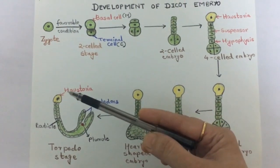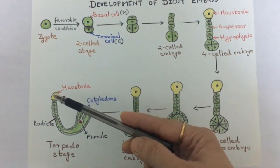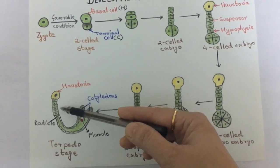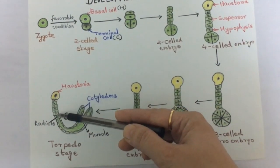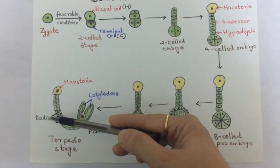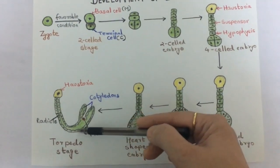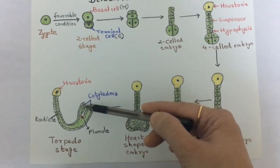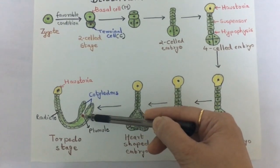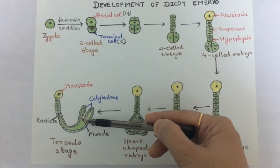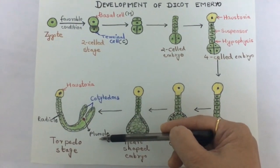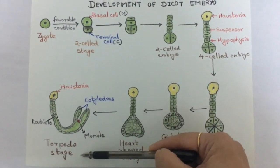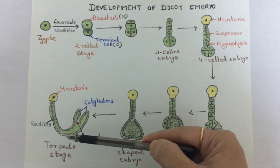Finally it forms the dicot embryo. We can see the proper formation with the haustoria at the basal end, below which are the suspensor cells, then the radicle which gives rise to the root. Two cotyledons are formed — hence it is termed dicot — and in the center of the cotyledons is the plumule, which gives rise to the shoot. This final stage is called the torpedo stage.